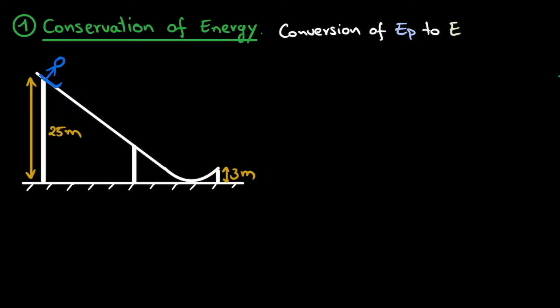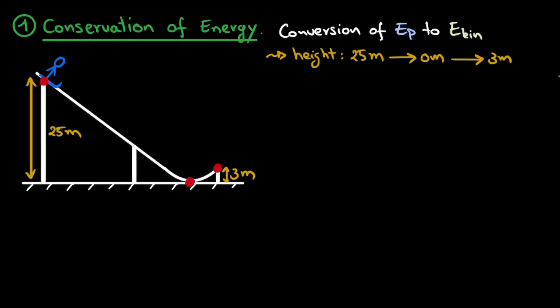We're looking at the conversion of potential energy to kinetic energy, with the constraint that the total energy — the sum of both terms — remains constant over time. The ski jumper starts at 25 meters, descends to 0 meters, and then goes back up to 3 meters. However, energy is a relative quantity, so we're only interested in differences. The only relevant quantity is the difference between where she starts and where she leaves the ramp, and that difference in height is 23 meters.